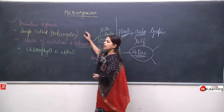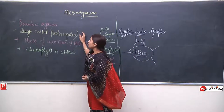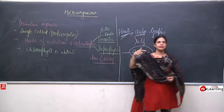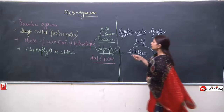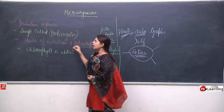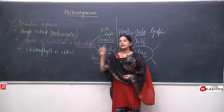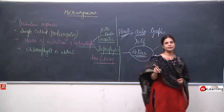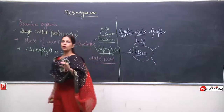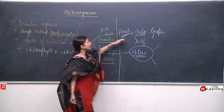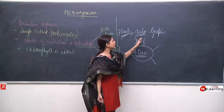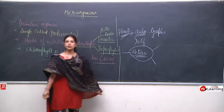Bacteria are single-celled and prokaryotes. Prokaryotes will be discussed in detail. The mode of nutrition of bacteria is heterotrophic, meaning they are not plants. Plants are autotrophs — the ones which can prepare their own food. Auto means self, tropic means nutrition.